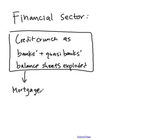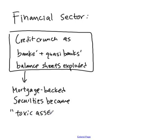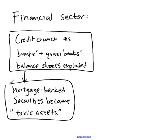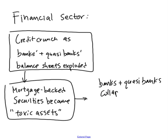Their balance sheets exploded. Suddenly no one wanted to buy mortgage-backed securities. On your balance sheet you have to report the fair value of what you own, and if no one wants to buy your mortgage-backed securities, they may be worth zero. When banks reported their balance sheets, they had all these assets — mortgage-backed securities — that no one wanted, forced to report them as having very little or no value. Their overall balance sheets went negative. Banks and quasi-banks now had assets worth zero on one side and a bunch of liabilities on the other.